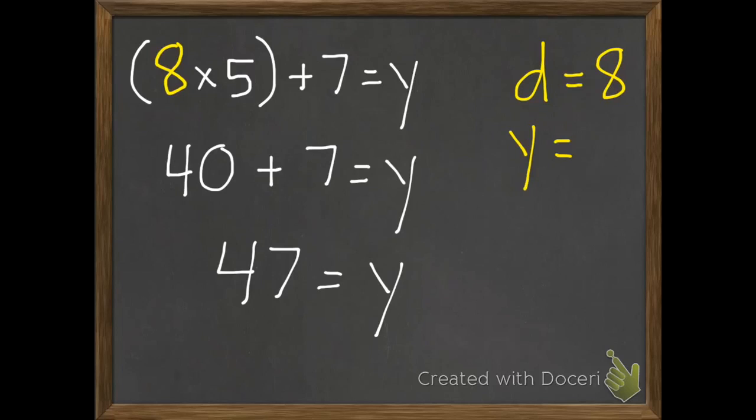So when we put 8 in for d, y equals 47. So that's our first example.